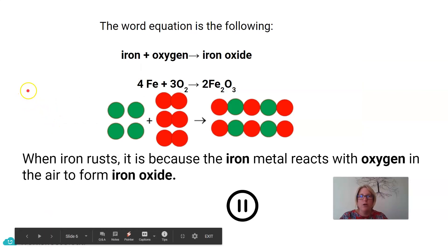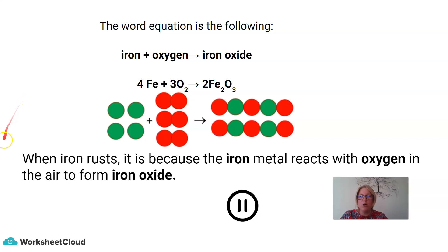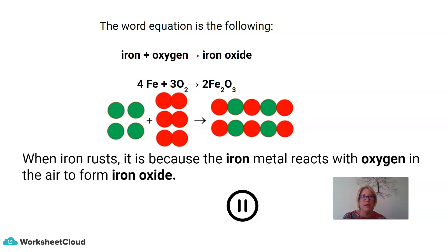The word equation is: iron plus oxygen gives us iron oxide. We get this word equation from the statement that when iron rusts, it is because the iron metal reacts with oxygen in the air to form iron oxide. We can represent this with ball diagrams, and from this we are able to represent it in chemical reaction formulae, which would be four molecules of iron plus three molecules of oxygen — remember, oxygen in its natural state is diatomic — to give two molecules of iron oxide.